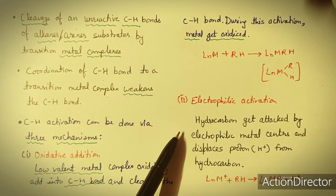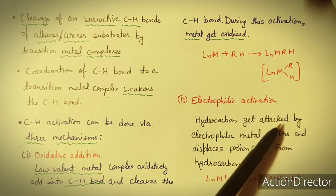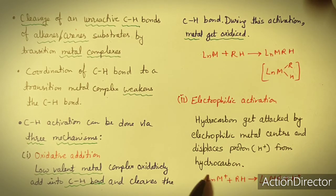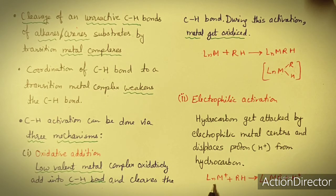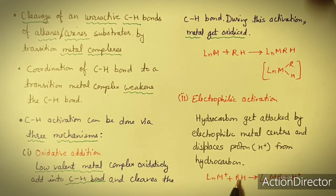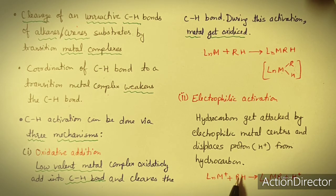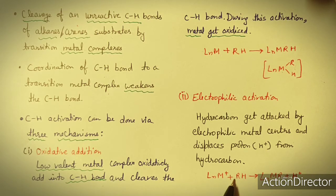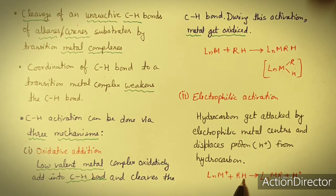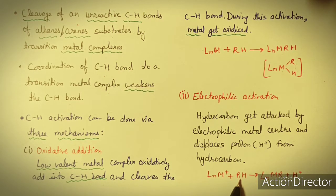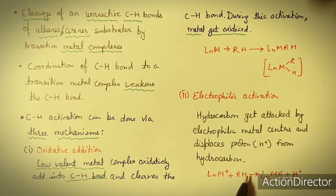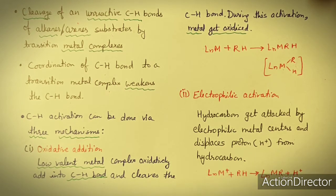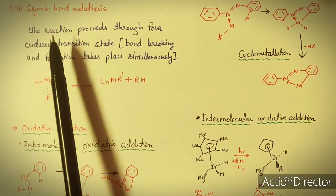The second type of mechanism is electrophilic activation. In electrophilic activation, the hydrocarbon is attacked by an electrophilic metal center, which displaces a proton from the hydrocarbon. The metal complex can extract the proton and add the R group to itself, thus activating the C-H bond. In this way the C-H bond of an alkyl or aryl compound is activated through an electrophilic attack.